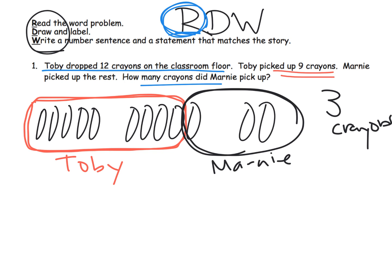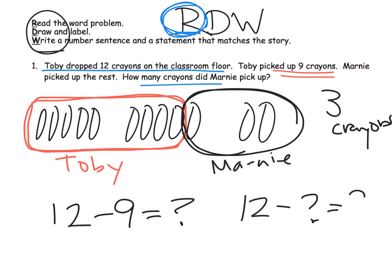What's a number sentence that we could write? Well, one sentence we could write is 12 minus 9 equals what. We could do another one: 12 minus what equals 9. Another one: 9 plus what equals 12. There's a whole variety of number sentences that our students could write. Give your students a chance to come up with the number sentence that makes the most sense to them, as long as it's correct.